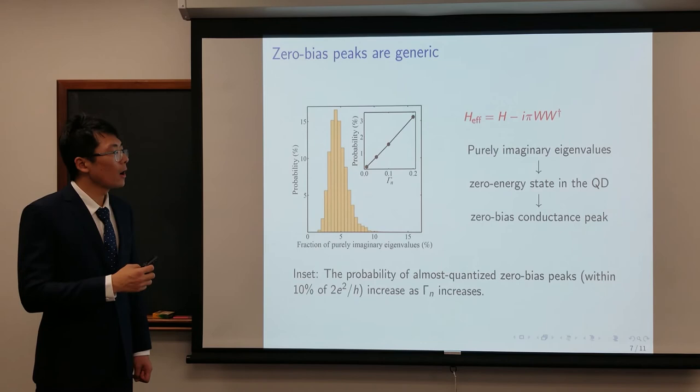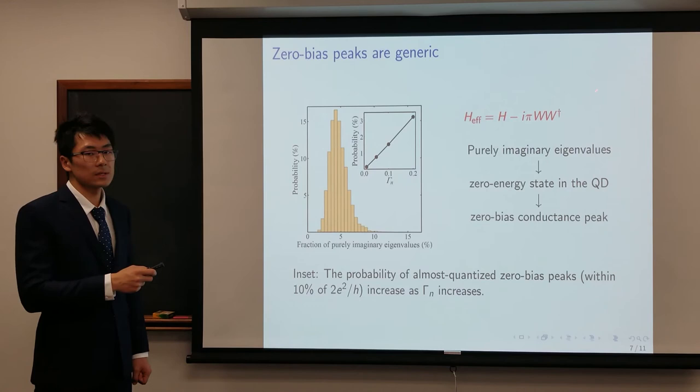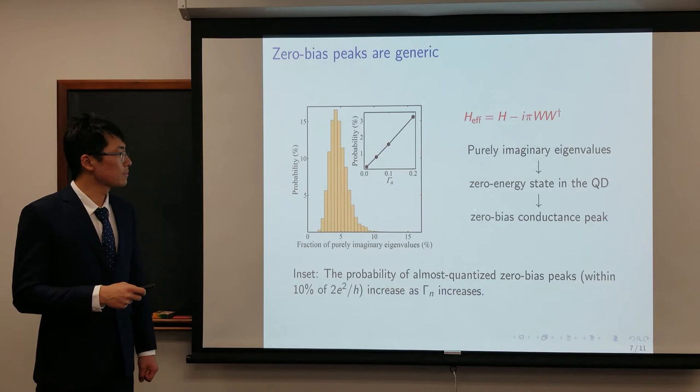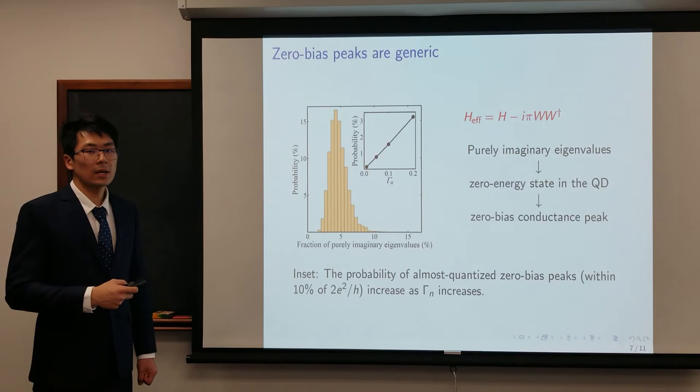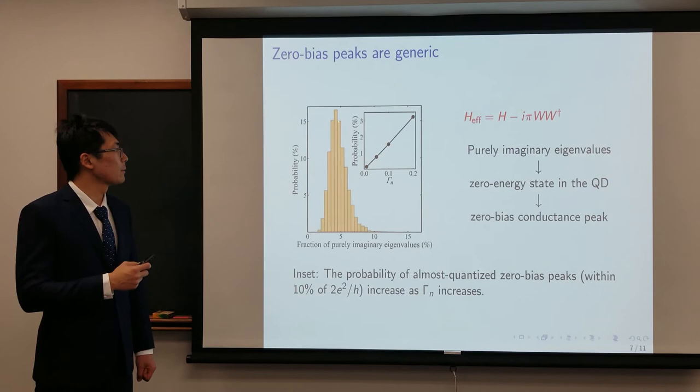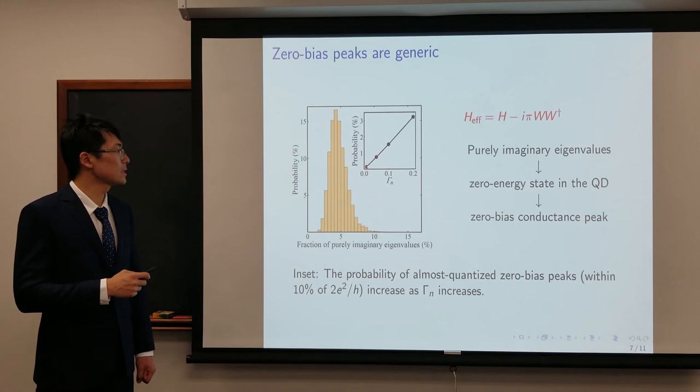Finally, we want to show that all above results are not just for one particular instance. The zero-bias peaks are very generic in the random matrix theory. We first define the effective Hamiltonian H_eff, which includes the self-energy of the lead operator. If H_eff has a pair of purely imaginary eigenvalues, that indicates a zero-energy state in a quantum dot, and then we will probably see a zero-bias conductance peak. We regenerate a large ensemble and find that the fraction of purely imaginary eigenvalues is actually fairly noticeable. The zero-bias peak comprises around 4% of the phase diagram in most of the samples. The number 4% here is not important, but what is important is that it's not approaching zero. Then we investigate the conductance statistics in the zero-bias peak and plot in the inset the probability of almost quantized zero-bias peak, which is defined within 10% of 2e²/h, is also not zero and will increase as gamma_n increases.